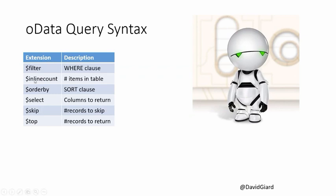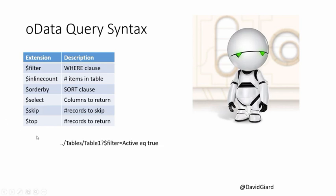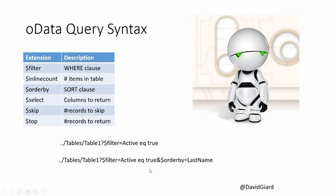The OData syntax allows you to add things to the query string to do filtering, sorting, pagination, and limiting results. For example: '/table/tablename?$filter=active eq true' — we have to use 'eq' because the equals sign is already used. You can combine these: 'active eq true & $orderby=lastName' to filter to active records and order alphabetically by last name ascending. That's the GET syntax for sorting, filtering, and pagination.